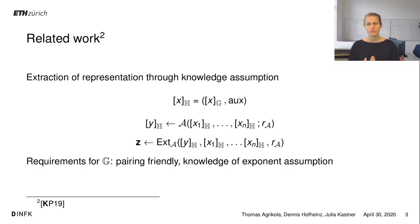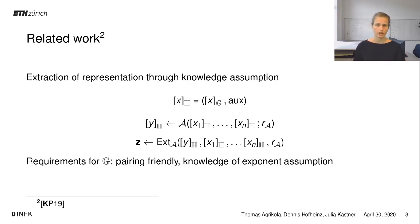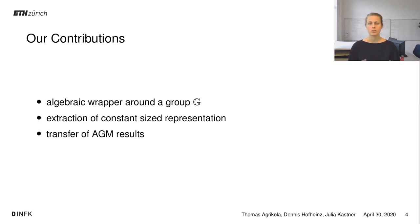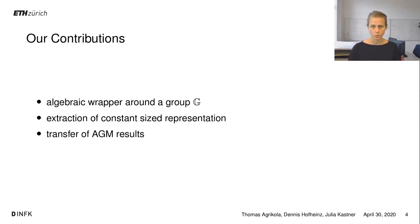We wanted to find a way to construct the algebraic group model without using a non-falsifiable assumption. So we asked ourselves: what if we only use falsifiable assumptions? How far can we get and how close to the algebraic group model can we get? We have something we call an algebraic wrapper around a base group G, and this algebraic wrapper allows us to extract a constant-sized representation, which in turn allows us to transfer results from the algebraic group model.